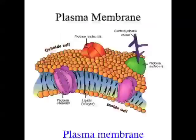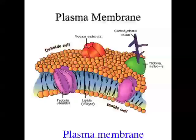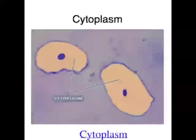All cells have an outer plasma membrane, or cell membrane, which keeps the contents of the cell separate from the external environment and also controls what goes into and out of the cell. All cells also contain cytoplasm — the jelly-like stuff inside the plasma membrane. It's got nutrients, salts, enzymes, and all of the organelles floating in it, except for the nucleus. The liquid part of the cytoplasm is called the cytosol.